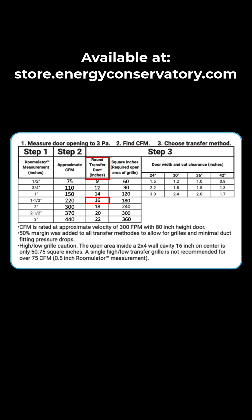Step 3 gives us three options for a passive transfer method: we can use a round transfer duct, a through-wall transfer grill, or we can increase the door undercut. Because the CFM quantity is too high, door undercut is not a reasonable option.